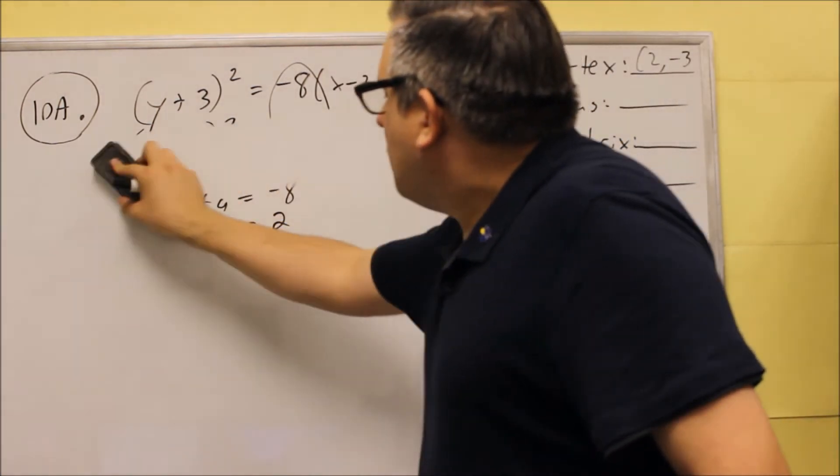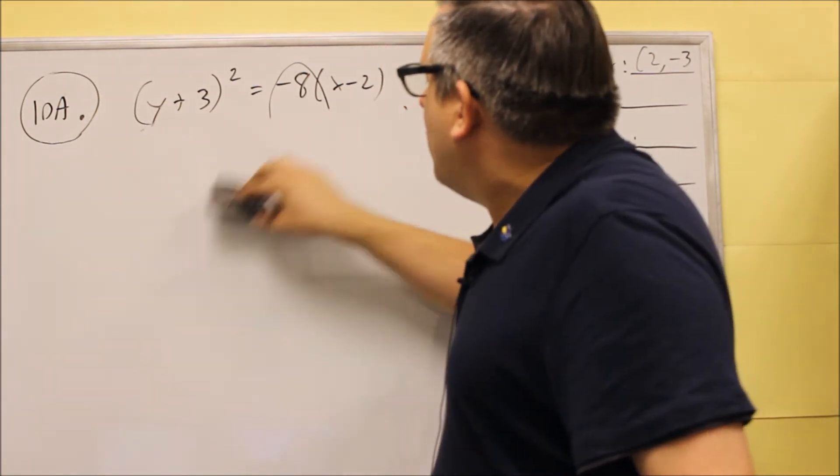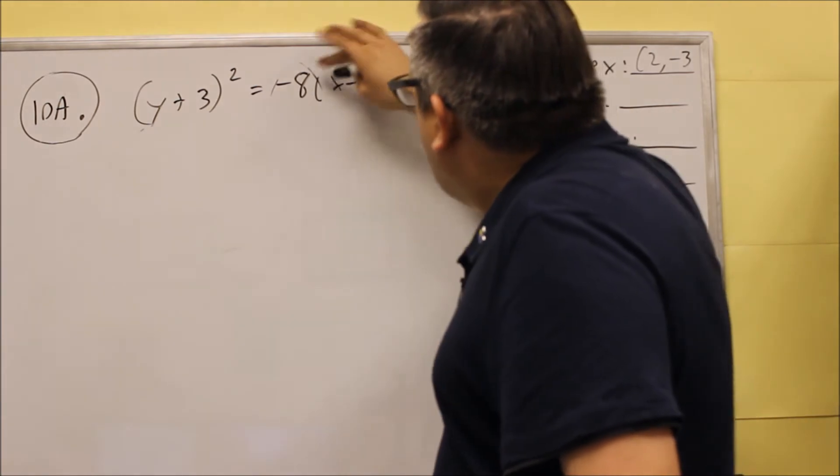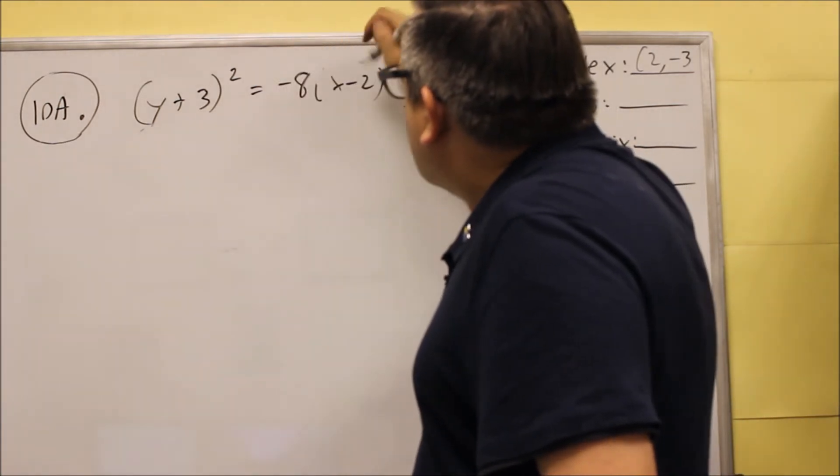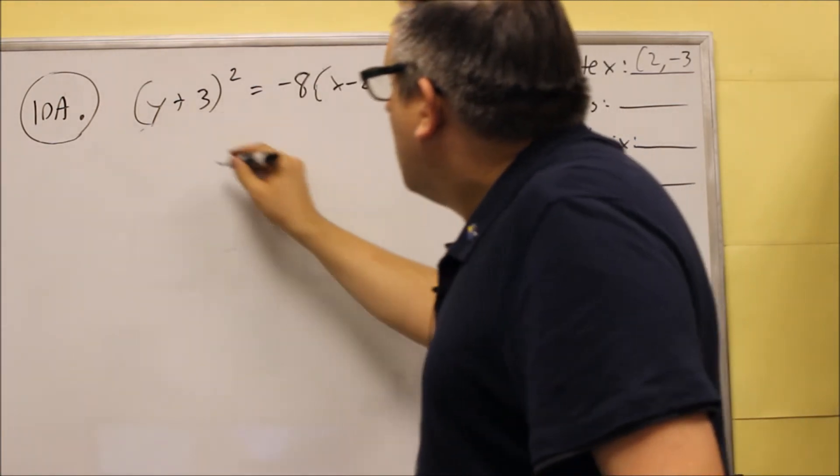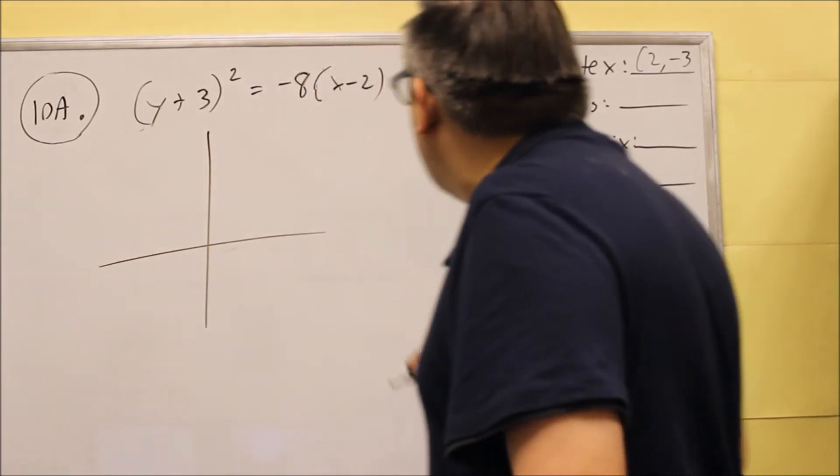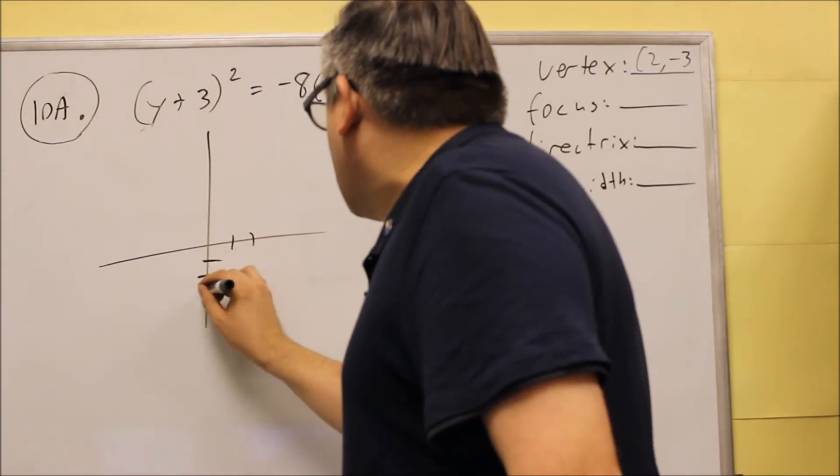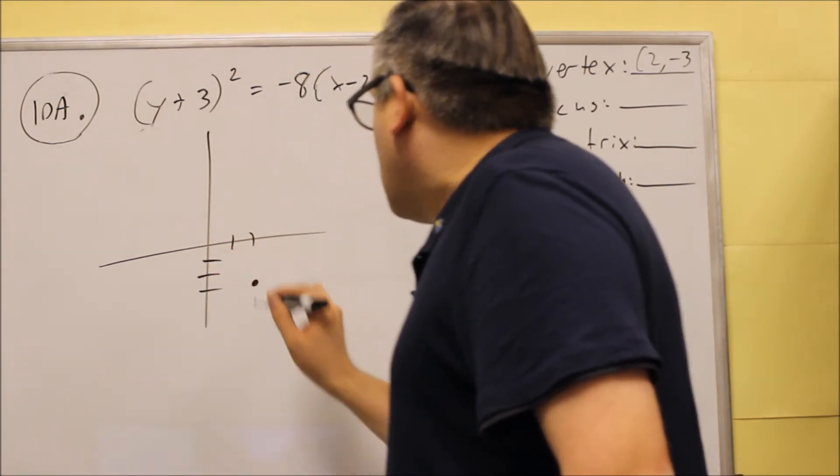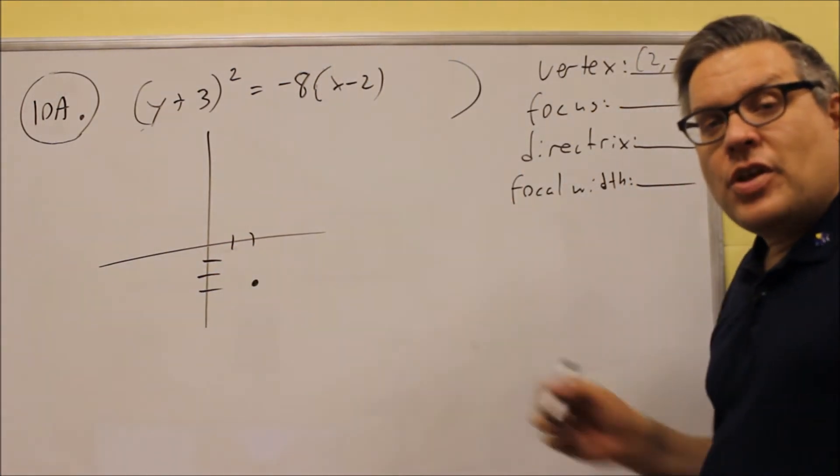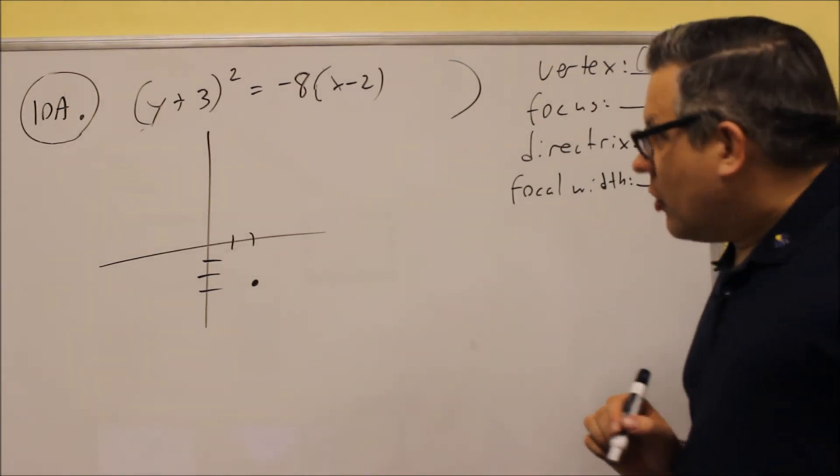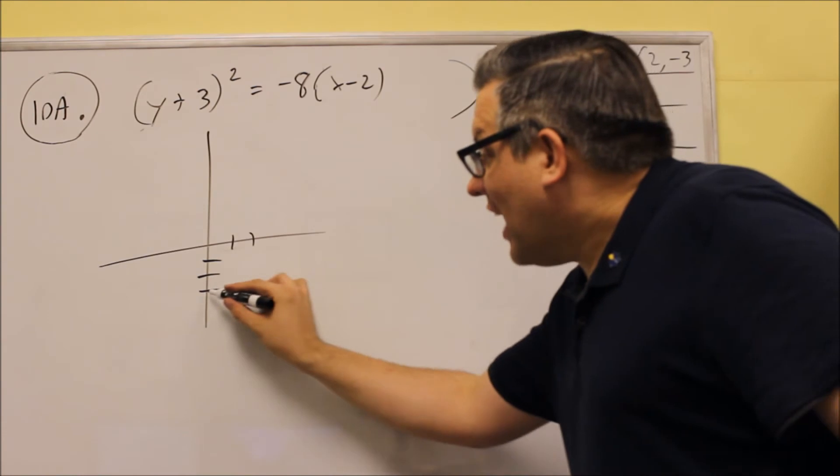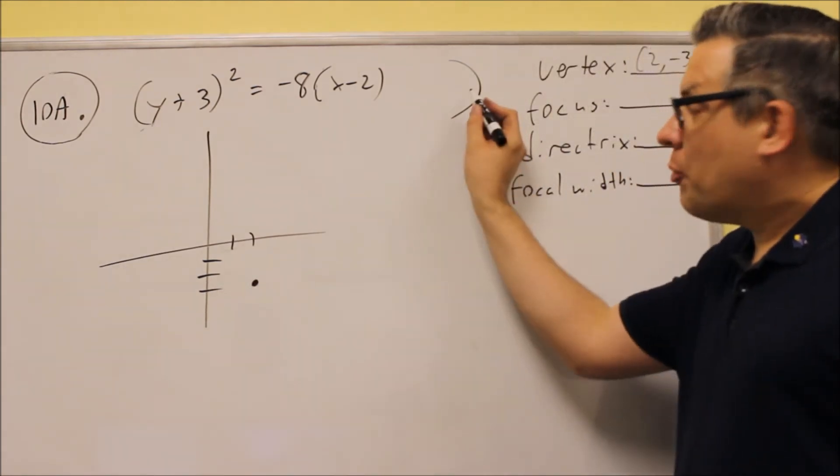So we don't need this model anymore since we know that. We know the a value is 2, so I can erase that so we can get some space here for the graph itself. And so now what we'll do is the graph. First thing you want to do with the graph is to plot the vertex. That's 2 and negative 3. Now our a value is 2. So to get the focus, we move the a in the same direction that it opens up.